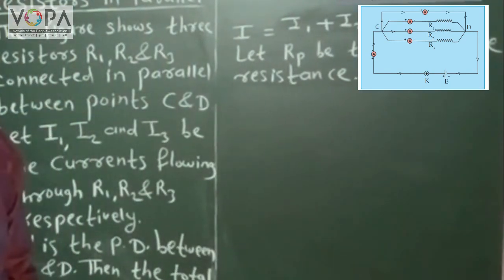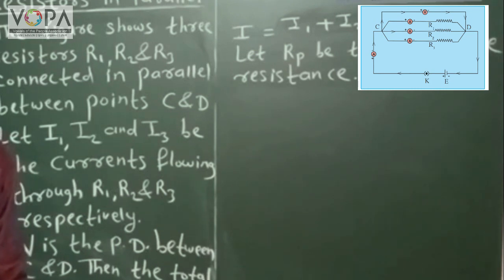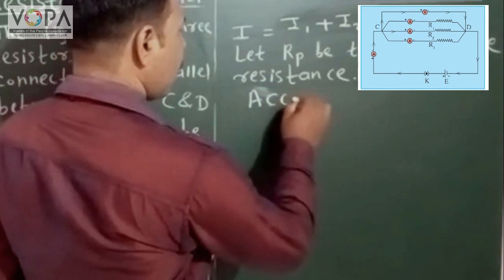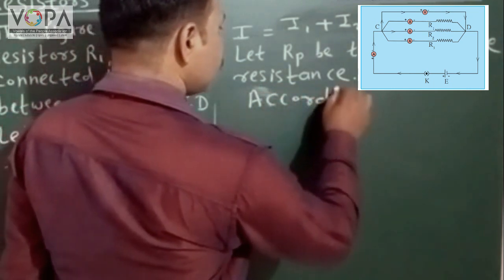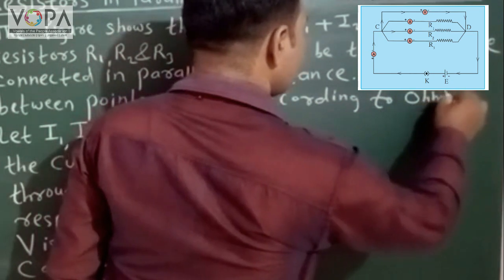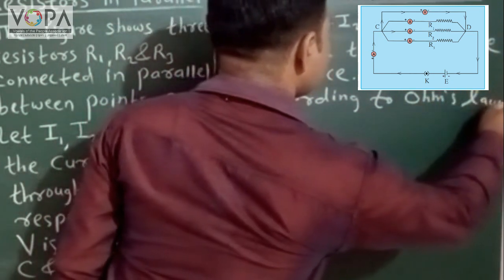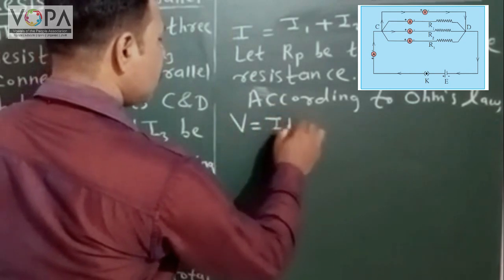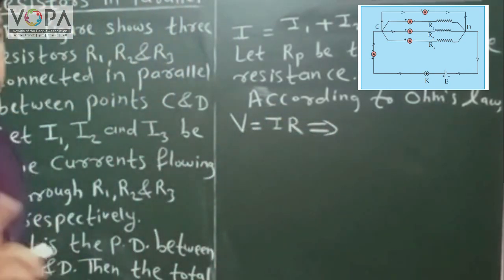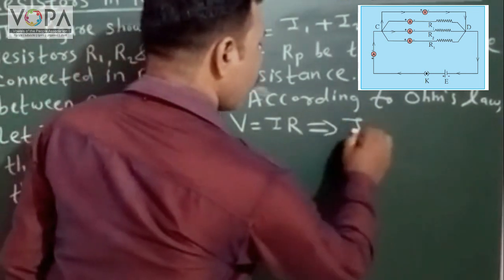Let Rp be the effective resistance for the parallel combination between the points C and D. According to Ohm's law, V = IR, which can be written as I = V / R.